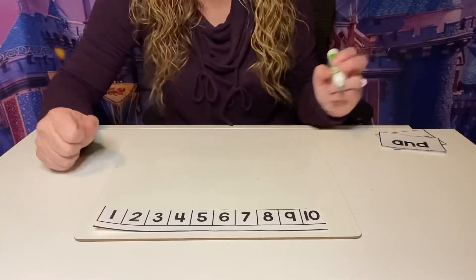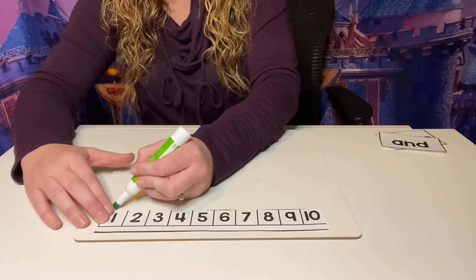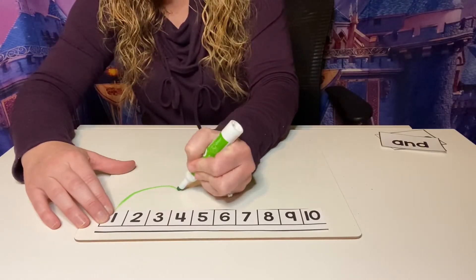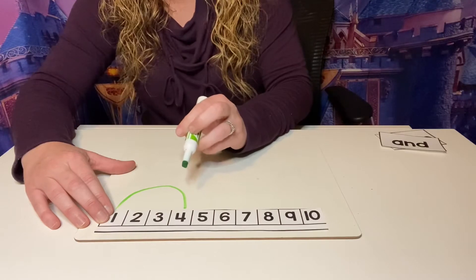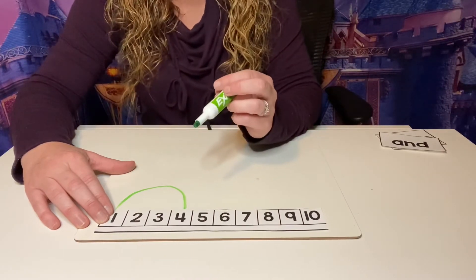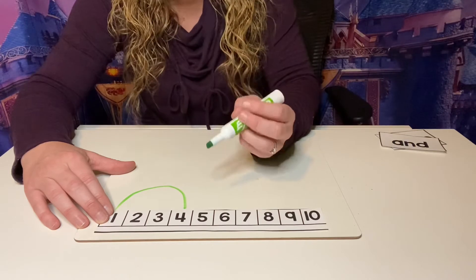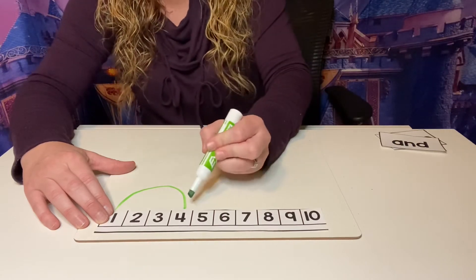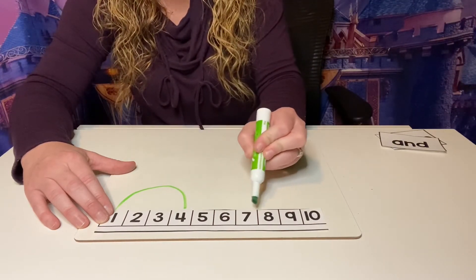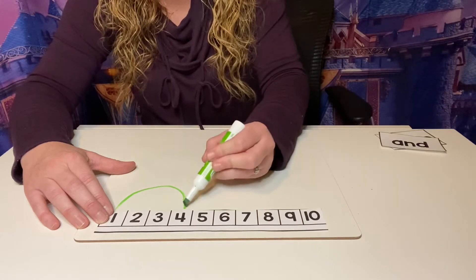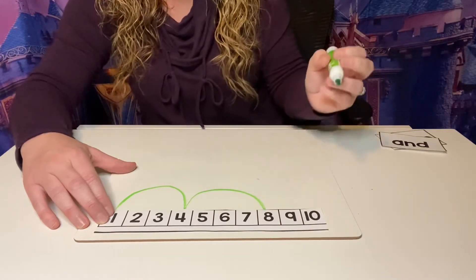Okay, so I ate four cupcakes — oh my gosh, I'm going to get a tummy ache eating all those cupcakes! Four cupcakes. So, we're going to hop over to the four. And then, guess what? I ate four cookies — oh my goodness! So, let's go over four. Ready? One, two, three, four. Hop over four, and that gave me eight.